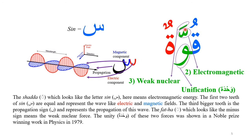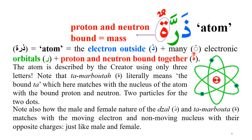The Fatha represents the weak nuclear force, which looks like a minus sign — as in beta decay, which is involved in the weak nuclear force, where a particle is lost. Allah describes the four different forces with just three letters: Qaf, Waw, and Ta Marbuta. The Waw represents both the weak nuclear and electromagnetic forces because they are essentially the same force — as demonstrated by the Nobel Prize-winning work in 1979 — which matches the Arabic word Wahdatun, meaning unification.